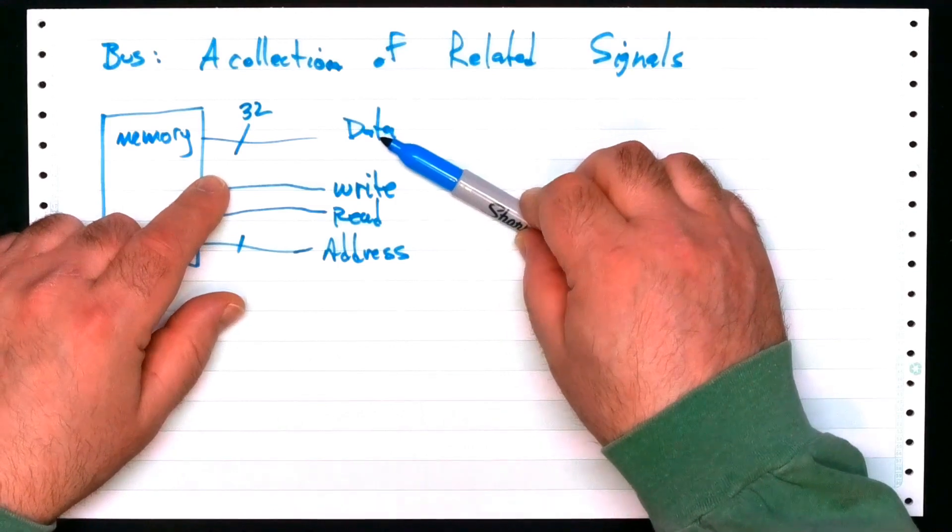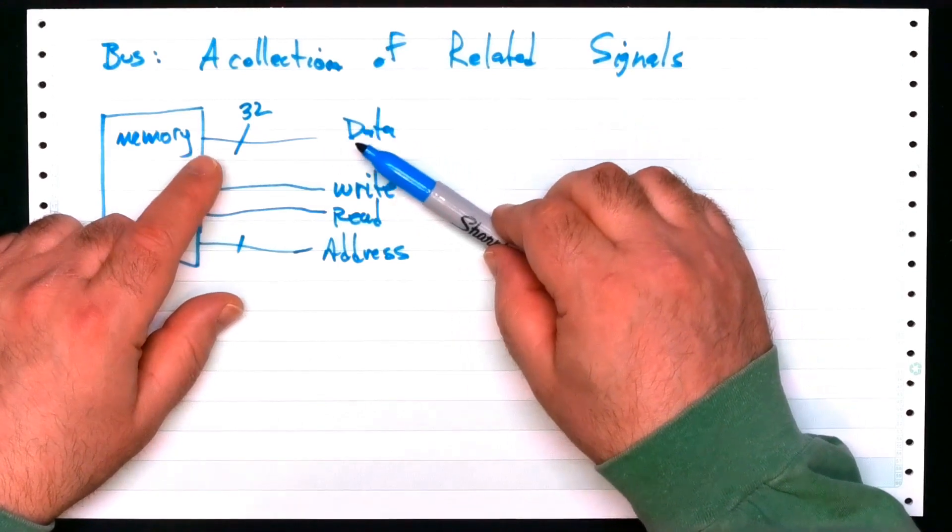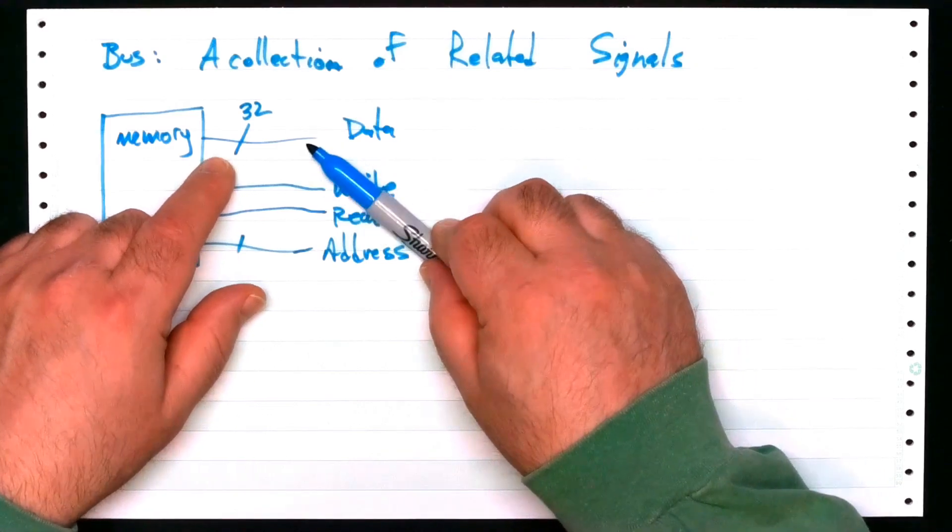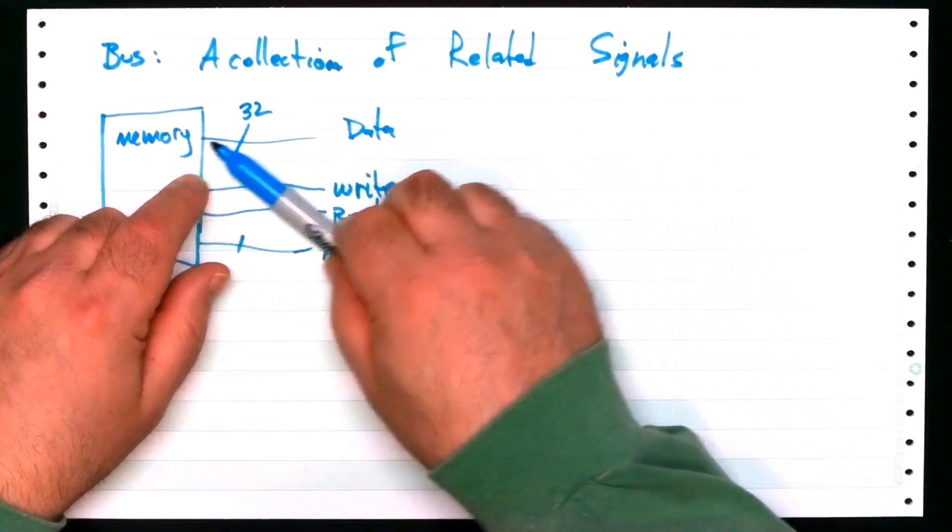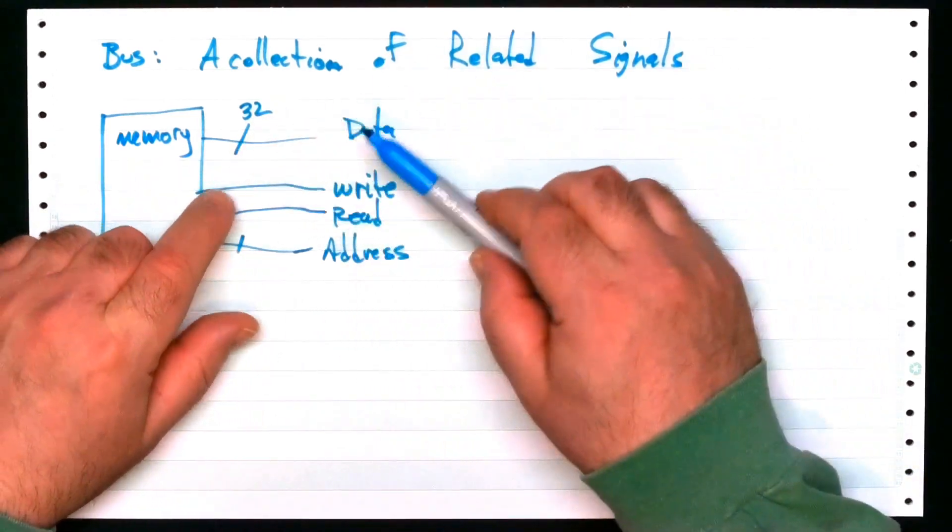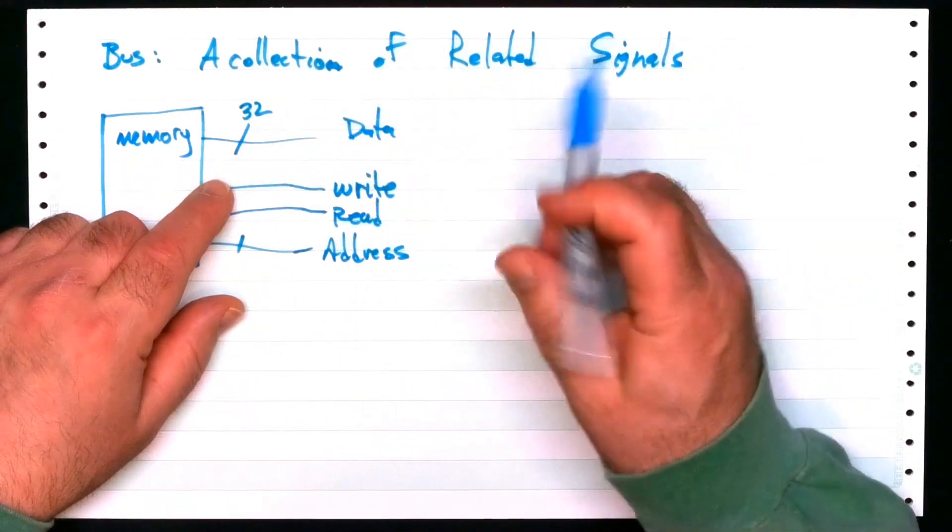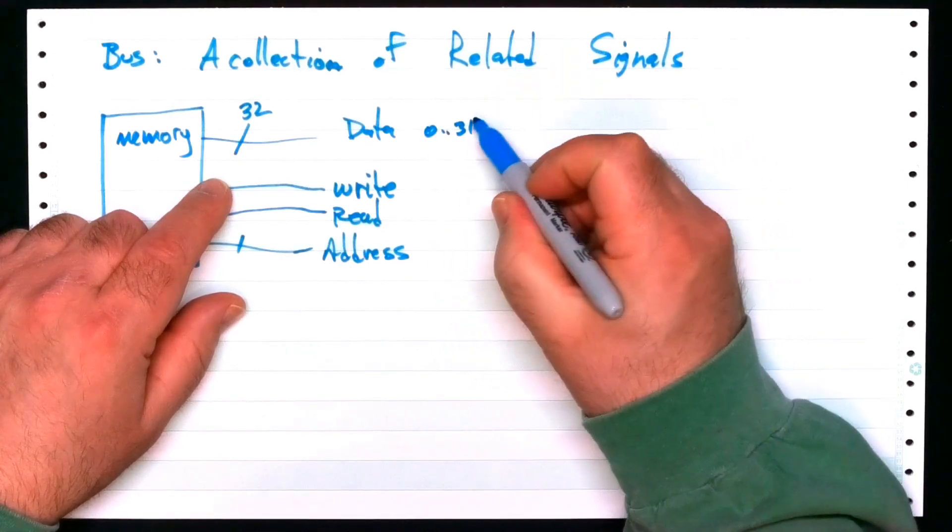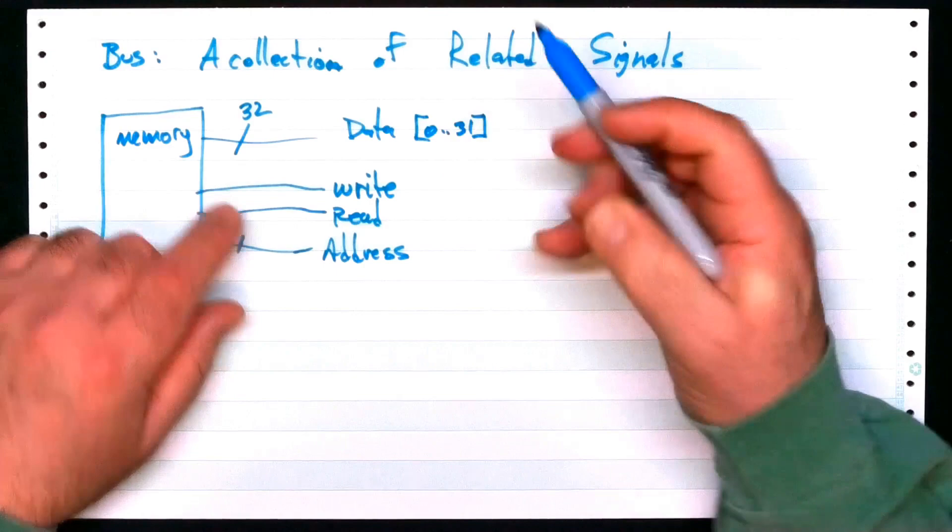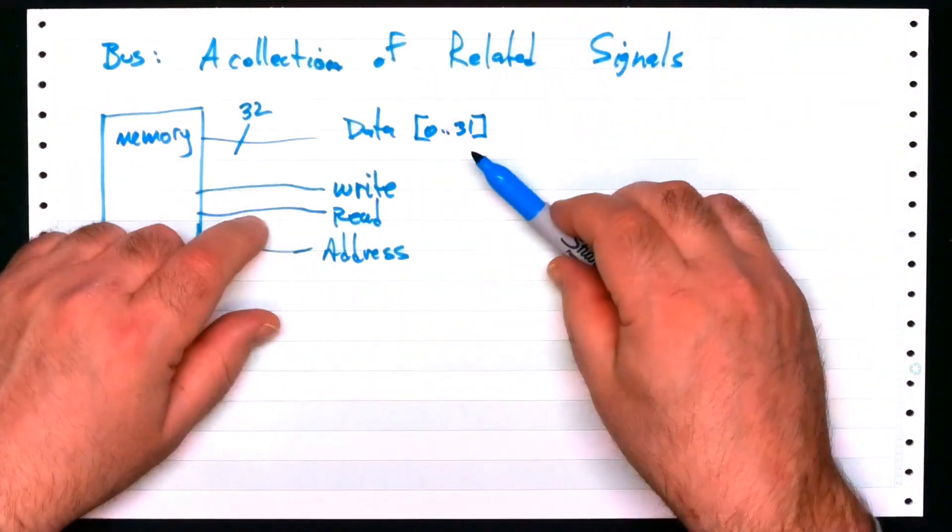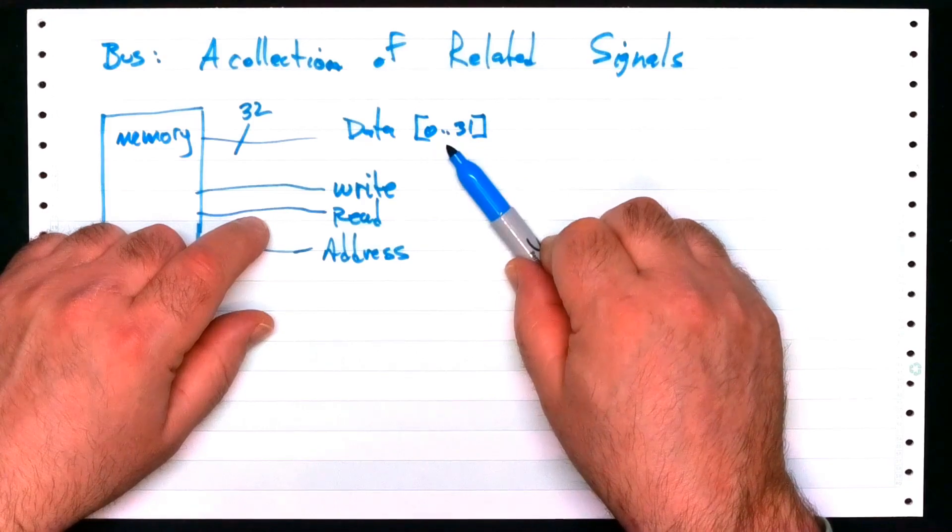And we would argue that it's obvious, or should be obvious to anyone familiar with the art, that the data line, this line here that represents 32 physical wires or signals, are going to be numbered from 0 to 31. Unless I say different, when I draw a schematic, any designer or engineer would assume this.